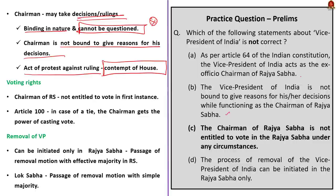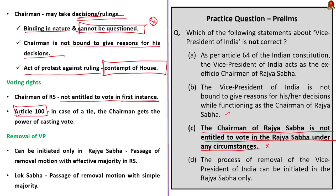Option C says that the Chairman of Rajya Sabha is not entitled to vote under any circumstance — this is incorrect. The Vice President, while acting as Chairman, shall not vote in the first instance, but when there is a tie, the Chairman gets the power of voting as per Article 100 of the Indian Constitution. This is called a casting vote. So Option C is the incorrect statement, giving us our answer.